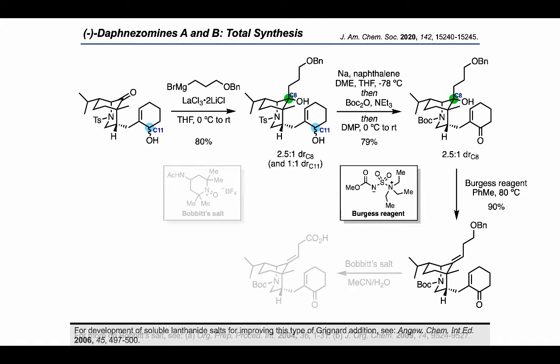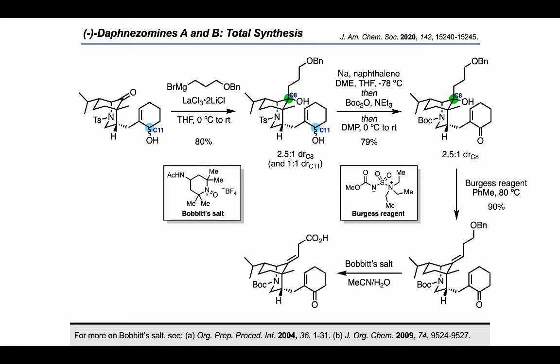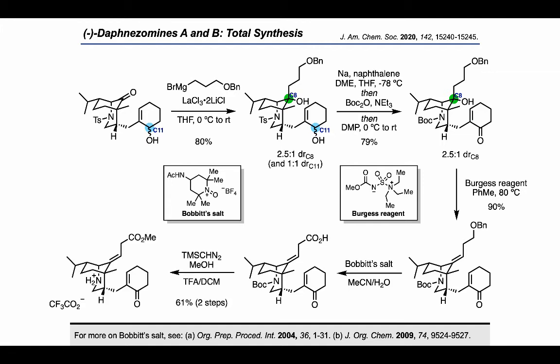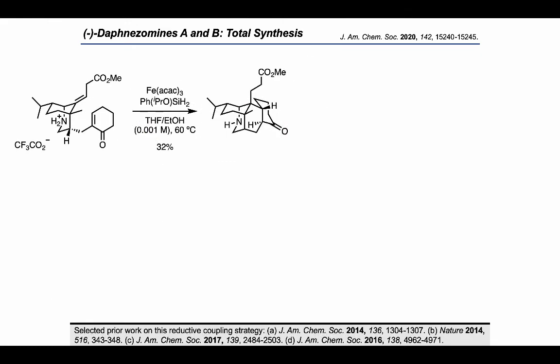At this point, the authors utilized an oxoammonium reagent, Bobbitt salt, in order to convert the benzyl ether into a carboxylic acid. Removal of the benzyl protecting group in the presence of the other alkenes in this substrate is not exactly trivial. Trimethylsilyl diazomethane could then be used to convert the carboxylic acid into a methyl ester, and TFA allowed removal of the BOC group. Having arrived at a point where several synthetic options might be investigated, the authors looked at many different approaches and finally identified conditions allowing this ring closure to take place, turning to hydrogen atom transfer chemistry developed by Shenvi and others.